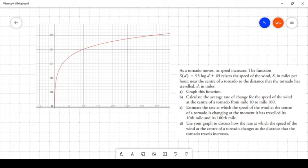its speed increases. The function S(D) = 93 log D + 65 relates the speed of the wind, S, in miles per hour near the center of a tornado to the distance that the tornado has traveled D in miles. So in other words,